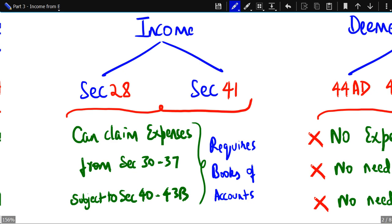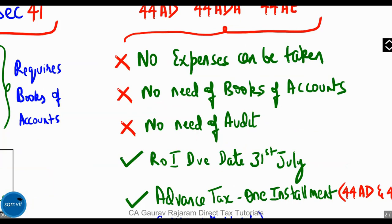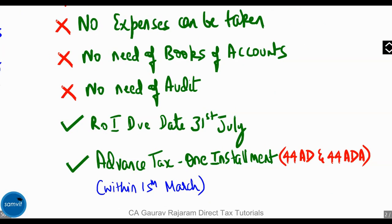The various deemed income sections we'll be covering are 44AD, 44ADA, and 44AE. Remember that no expenses can be claimed, you will not be required to maintain books of accounts or get them audited. The return of income due date is 31st July. Advance tax must be paid in one installment by 15th March, but this applies only to 44AD and 44ADA. For 44AE, advance tax has to be paid in four installments like any other assessee.